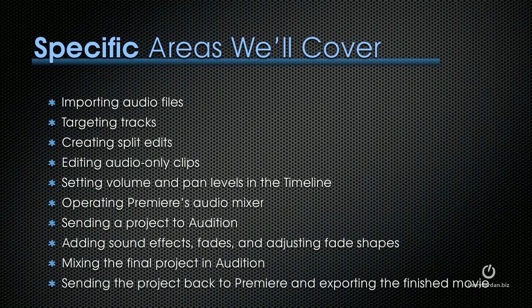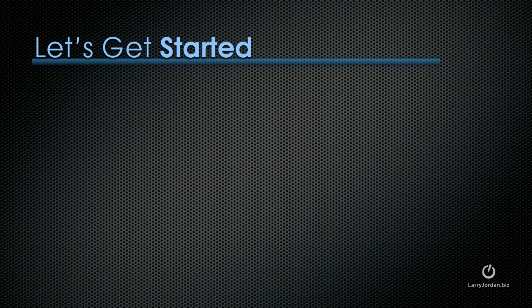So that's the movie that we're going to create. The video part is done — what we're going to work on is the audio. Specifically, within Premiere I want to show you how to import audio files, how to target audio and video tracks, how to create split edits, how to edit audio-only clips, set volume and pan levels in a timeline, and how to operate Premiere's audio mixer, which is far more extensive than the mixer inside Final Cut Pro 7. Then we'll switch over to Audition, where I'll show you how to send a project to Audition, how to add sound effects, add fades, and adjust fade shapes as you fade in or crossfade. Then we'll mix the final project in Audition, send it back to Premiere, build it into a finished movie, and export that finished movie as a QuickTime file. That's a lot to cover in a very short period of time, so let's get started.